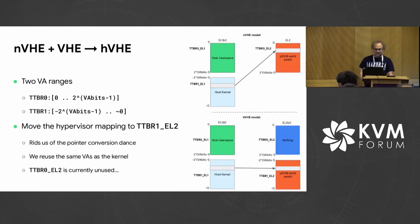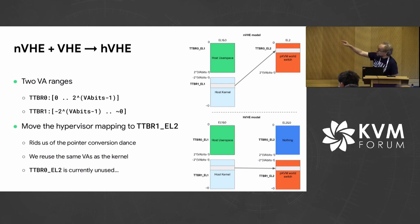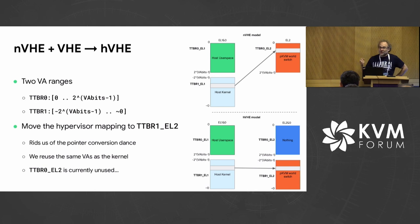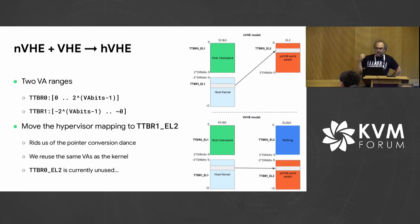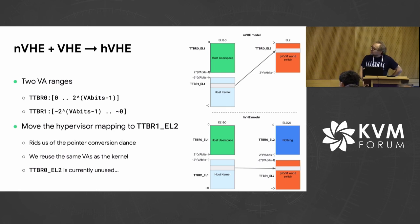How does that translate into memory layout? Well, we have these two VA ranges. We go from the NVHE model at the top to the one at the bottom, where we can actually move the hypervisor mappings to TTBR1, which means we don't need to play this translation game at runtime. We can just use pointers at face value — we'll probably have to sanitize them, but at runtime we don't need to offset them. That's quite neat — saves a few instructions and a few headaches. Interestingly, TTBR0 is actually unused for now — we'll see that later.